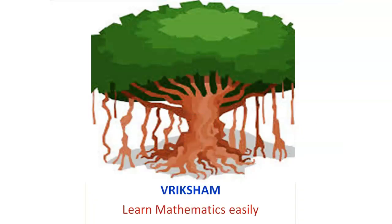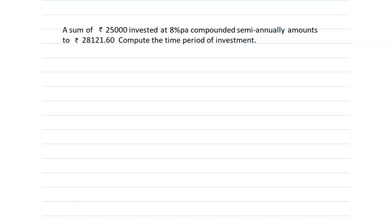Hi viewers, welcome to Brixham channel. Learn mathematics easily. Here we are going to find the answer for this problem. A sum of rupees 25,000 invested at 8% per annum compounded semi-annually amounts to rupees 28,121.60. We have to find the time period of investment. Here the rate of interest, the initial amount, and the final amount are given.